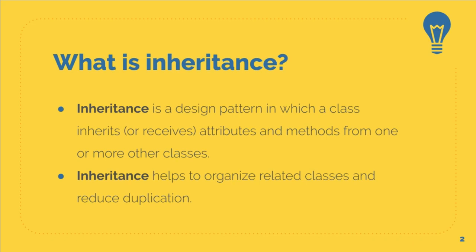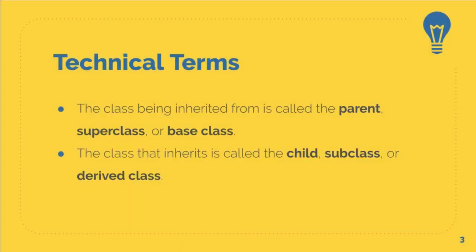There are a couple of technical terms we need to discuss in order to make this concept make more sense. We have a class that is being inherited from, and we have the class that is actually inheriting the attributes and the methods. The class that is being inherited from is sometimes called the parent class, the super class, or the base class.